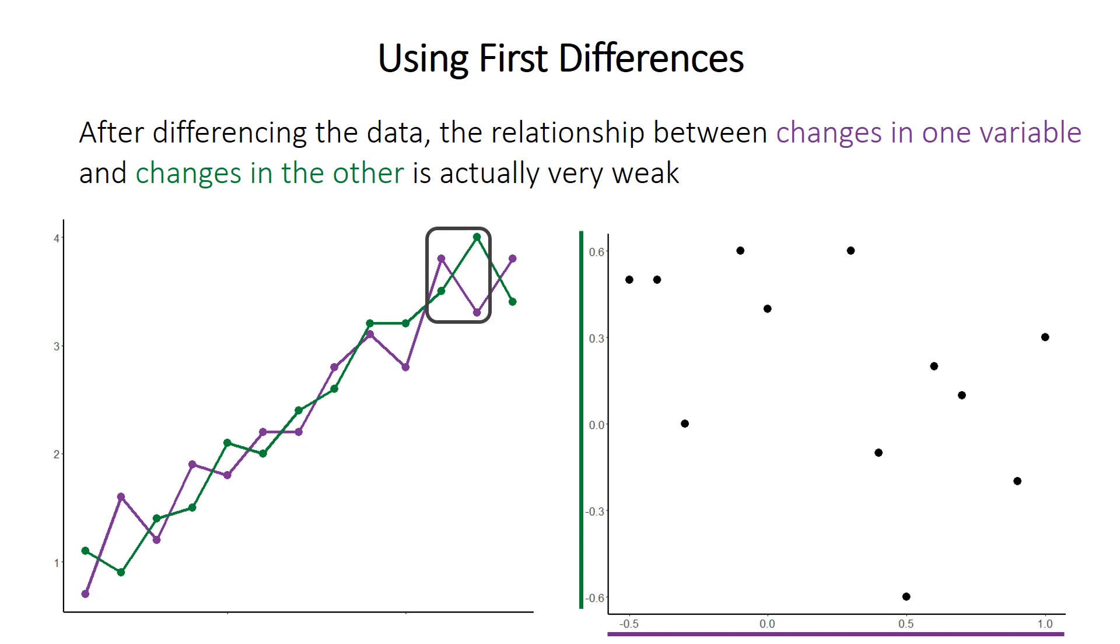But let's take this pair of points here. The green series increases by quite a large amount, but the purple series actually decreases by a lot. So that pair of points, if we do the first differences, corresponds to this. A fairly large change in green and a negative change in purple on the x-axis. There.